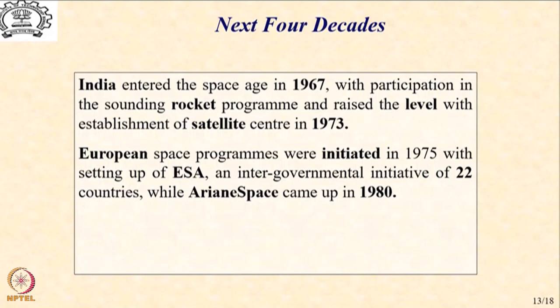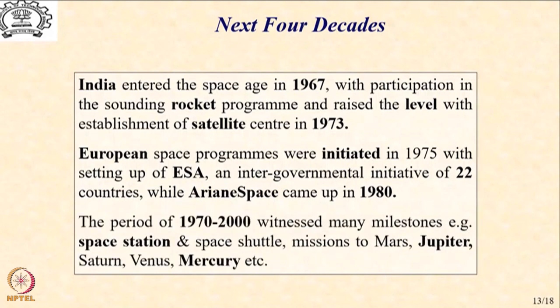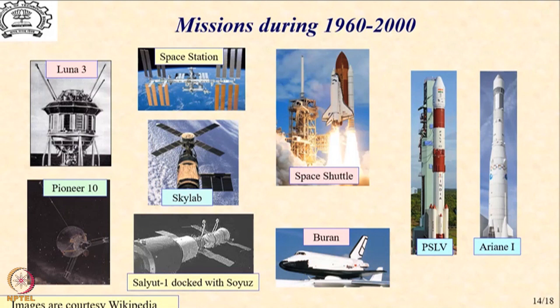It is worth noting how these things evolved in Europe. European space programmes actually started later than ours, in 1975, with the establishment of the European Space Agency — an intergovernmental initiative of 22 countries. Ariane Space, a private player, came up in 1980. The period 1970 to 2000 witnessed many milestones: space stations and space missions to Mars, Jupiter, Saturn, Venus, Mercury, and more. I will give you a snapshot of the various objects that came into being and sustained themselves.